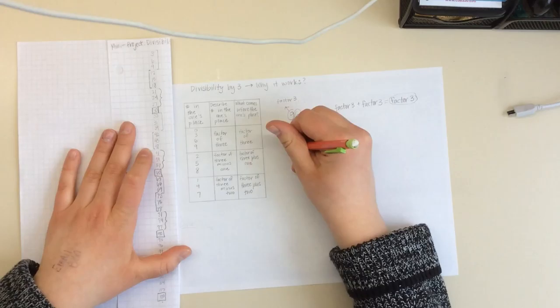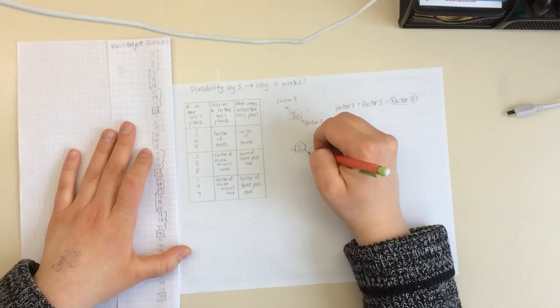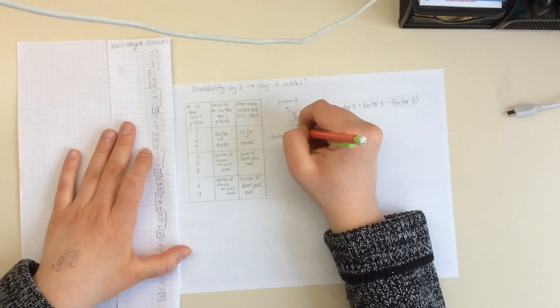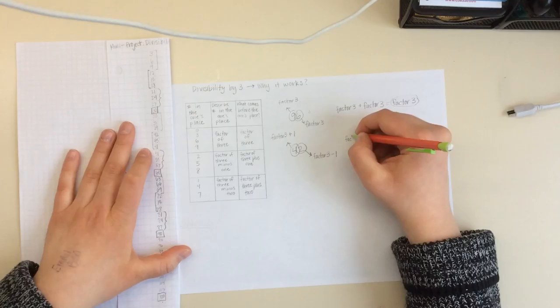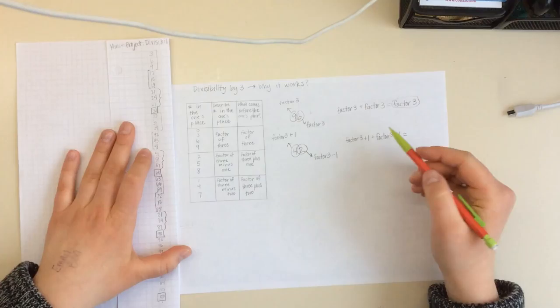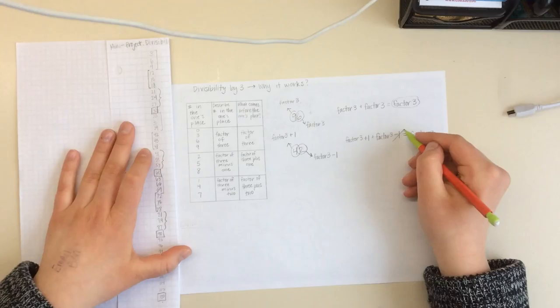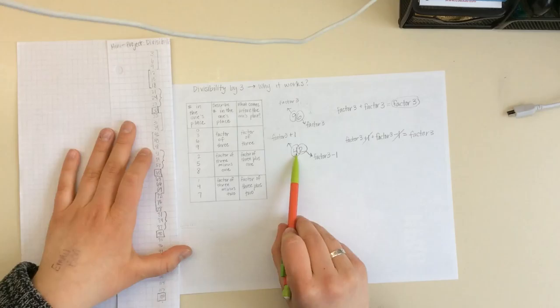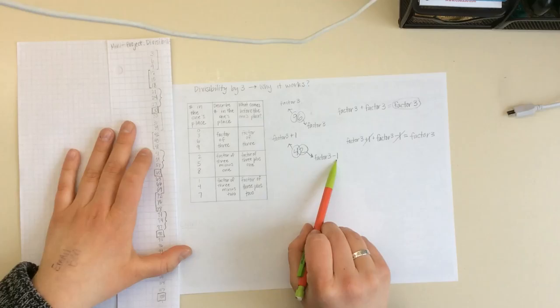Now if we look at the 2, 5, 8 pattern, we know that that's a factor of 3 minus 1. So then we looked at the digit that comes to the left of it, and we see that that's a factor of 3 plus 1. So if we take 42 for example, the 2 is going to be our factor of 3 minus 1, and our 4 is our factor of 3 plus 1.